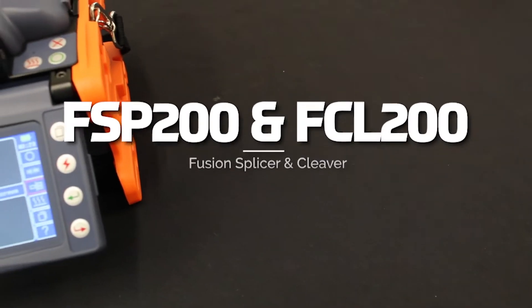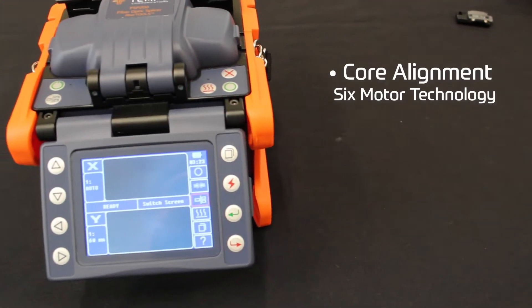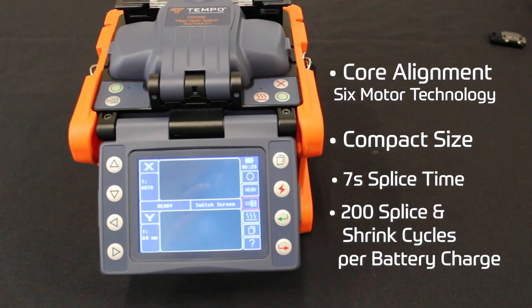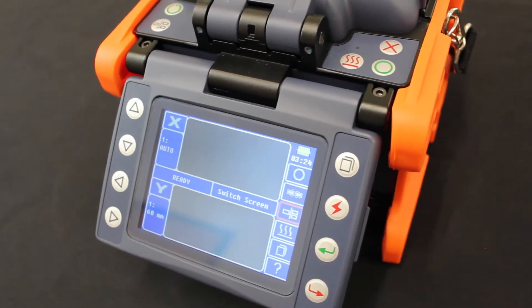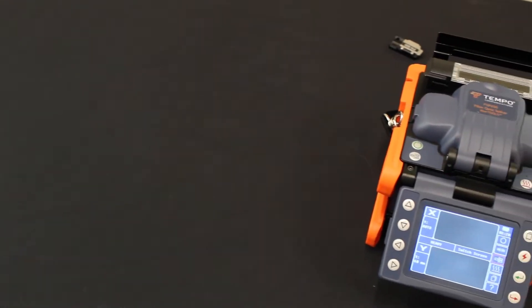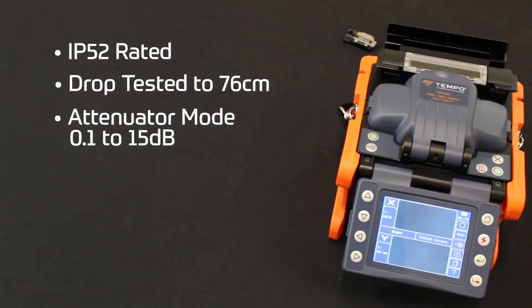The Tempo Communications FSP200 is a core alignment fusion splicer used to splice fibers in all FTTX applications. The precise alignment utilizes six motor performance to align the fibers, which provides industry leading low insertion loss and near zero reflectivity for the most demanding fiber projects.